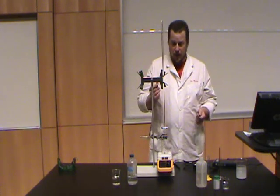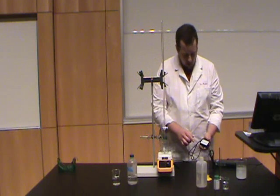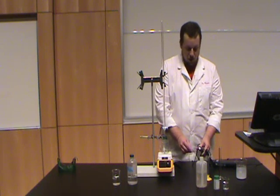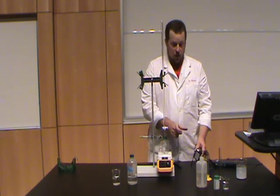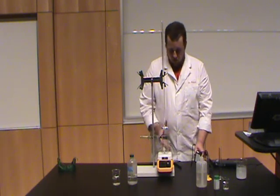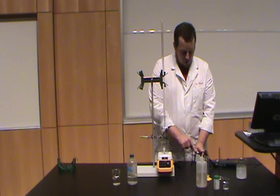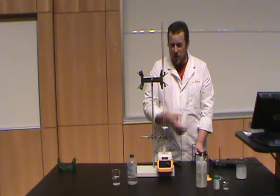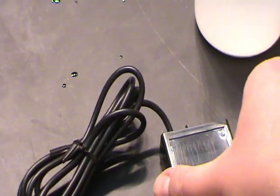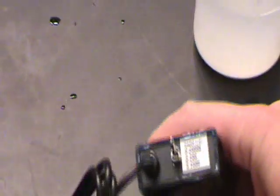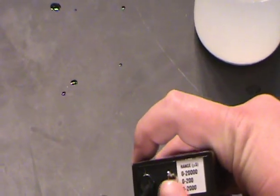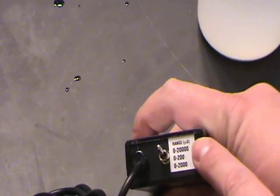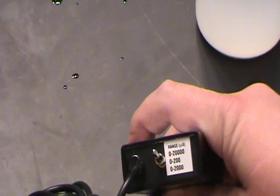Here's where there's a slight error in your lab manual. Here's the conductivity probe meter box, and there's a switch on that meter box which selects the range of conductivities for your experiment. For this experiment, it actually works better if you switch it to the 0 to 20,000 range. Your manual says the 0 to 2,000 range. So make sure that you move the range selector up to the 0 to 20,000 option before you calibrate your conductivity probe.